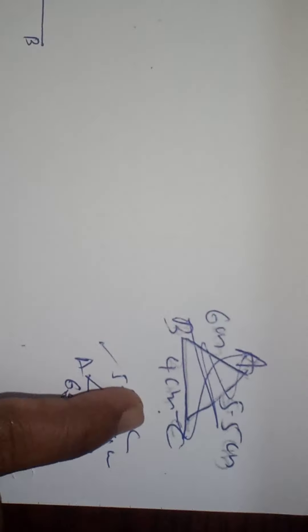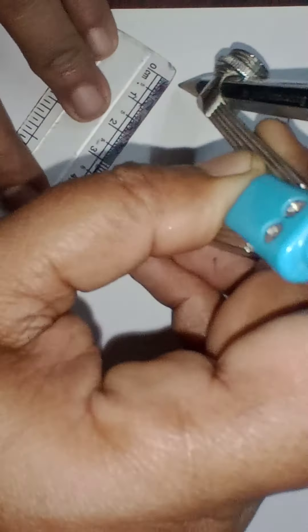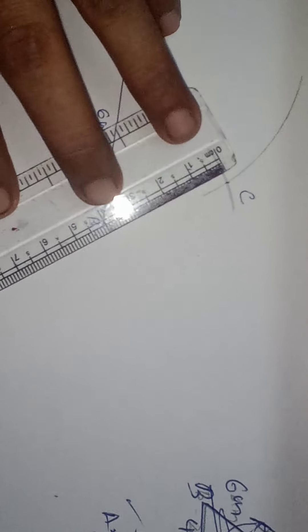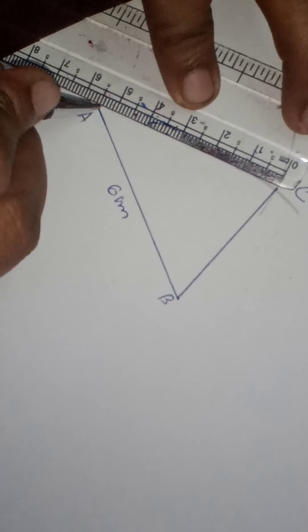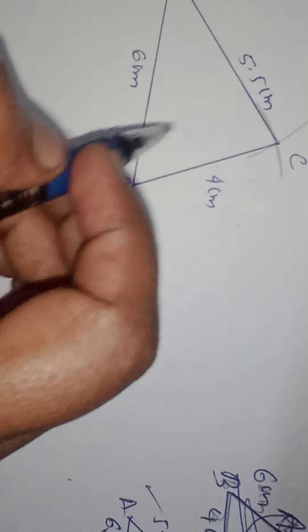From the scale, take 5.5 in your compass measurement. Take 5.5 and from point A draw an arc. Next, BC is 4 cm — take 4 cm in your compass and from B cut the first arc. You will get a point where the arcs intersect — that is the third vertex C. Now join these two vertices together: join A to C and B to C.